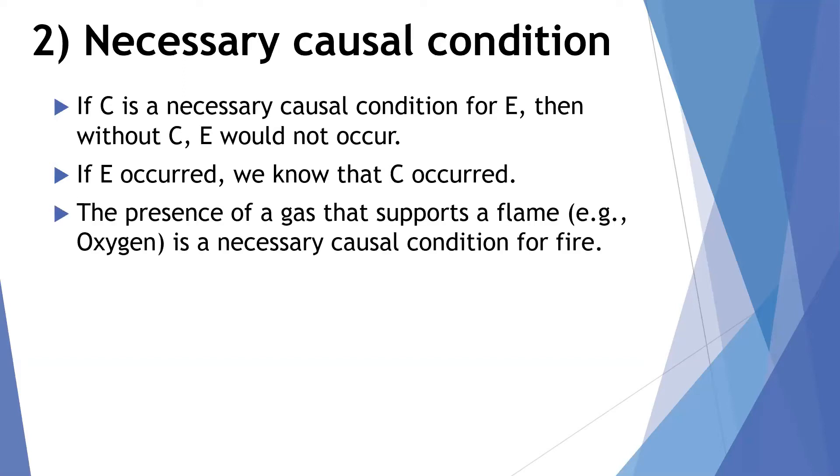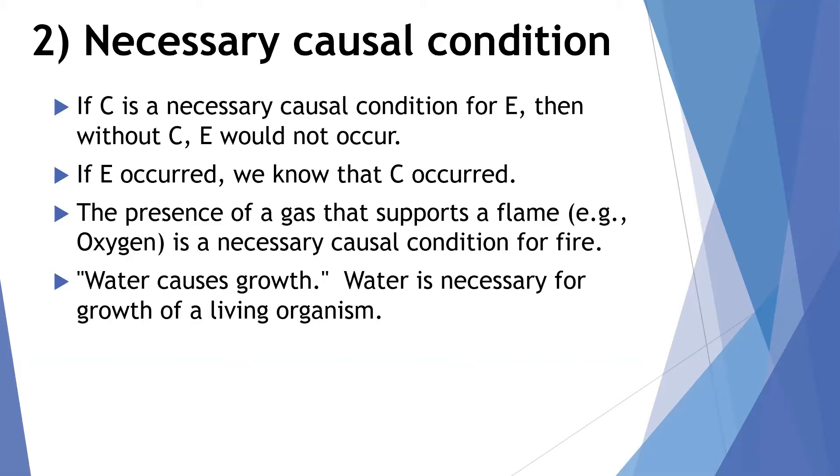An example of this would be the presence of gas that supports a flame, typically oxygen, for example, in a normal flame from a candle. So the presence of gas is a necessary condition for the flame, for the fire. If we say something like water causes growth, and we're referring to a living organism, what we're talking about is water is a necessary cause of growth for the living organism. If you think of animals or even humans, we have to have water to grow. So it must be there. It's a requirement.